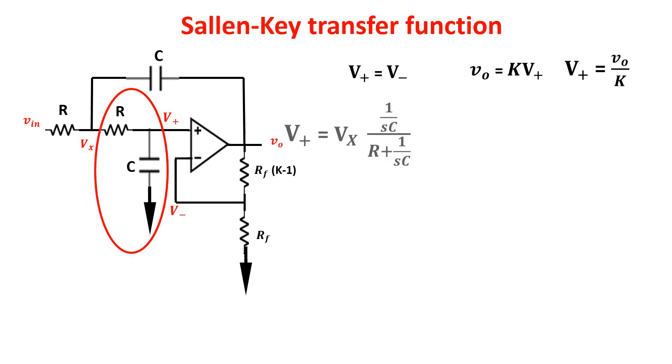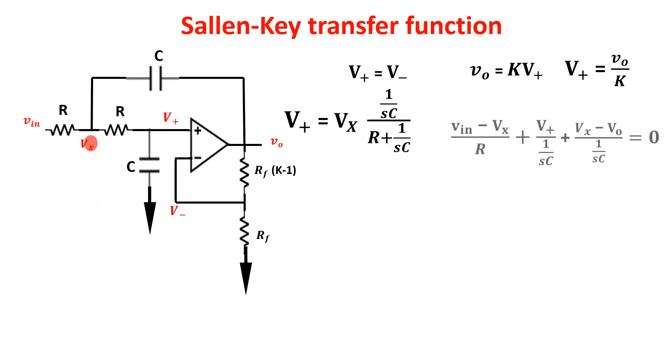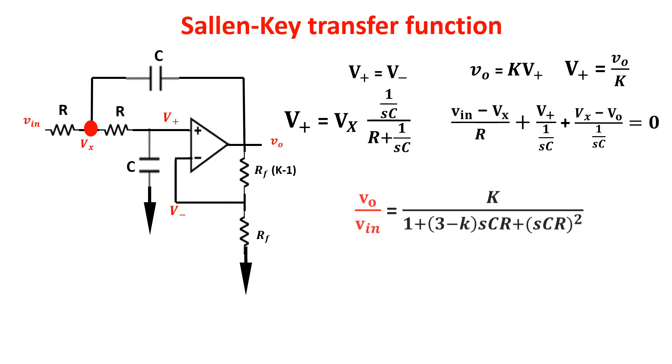So we can write this relation. Now we write the Kirchhoff current law at this point here. Through a little bit of algebra we get this second order equation in which you see that the gain at zero frequency or in DC, so putting S equals zero, is K as we explained before.